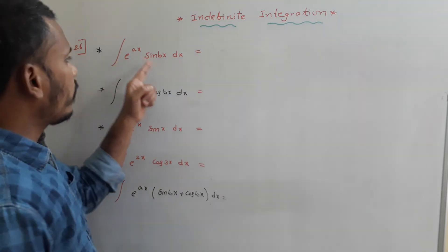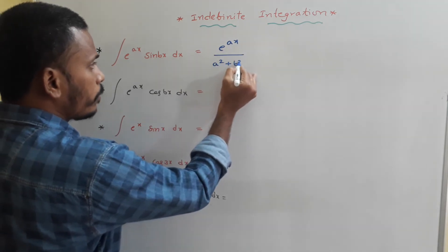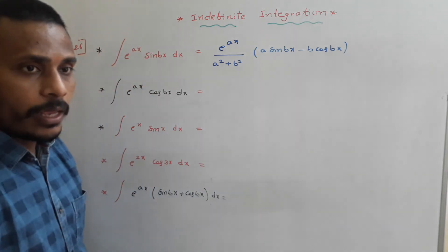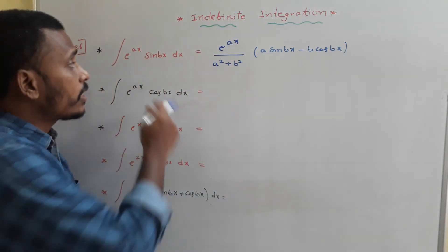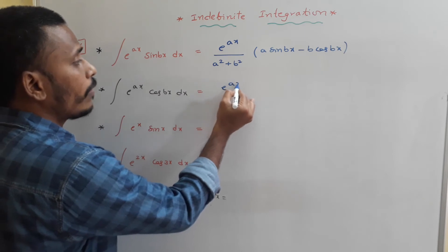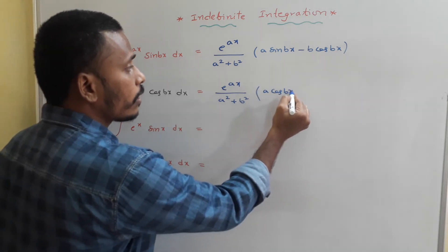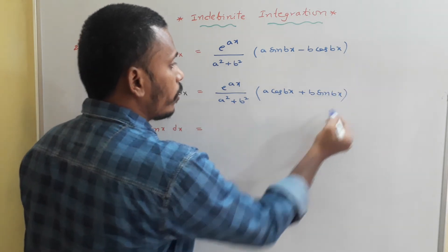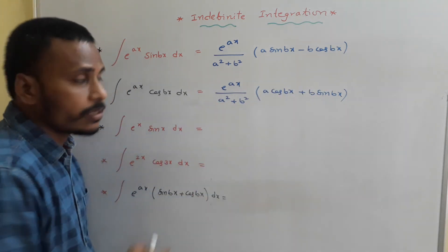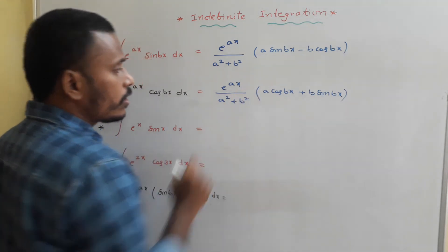Integral of e^(ax)·sin(bx)dx = e^(ax)/(a² + b²)·(a·sin(bx) − b·cos(bx)). In the same way, if you derive integral of e^(ax)·cos(bx)dx, the result is e^(ax)/(a² + b²)·(a·cos(bx) + b·sin(bx)). Notice: since sin(bx) is involved in the first, the first term uses a·sin(bx); since cos(bx) is involved in the second, the first term uses a·cos(bx).